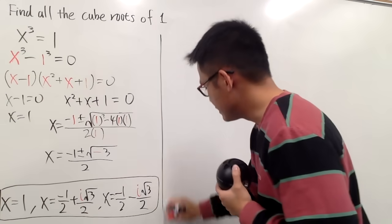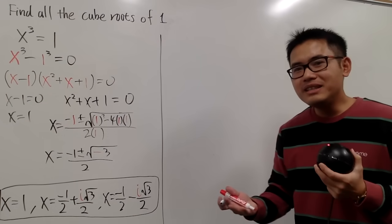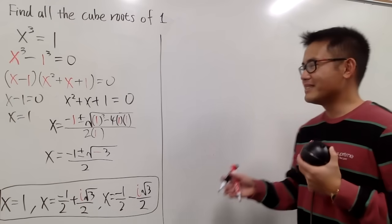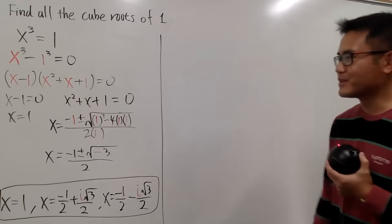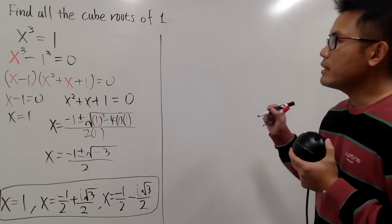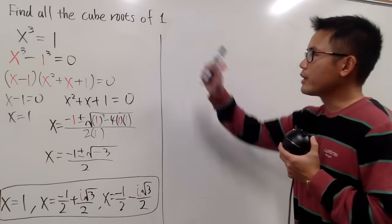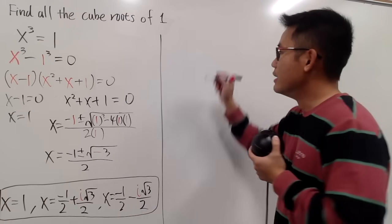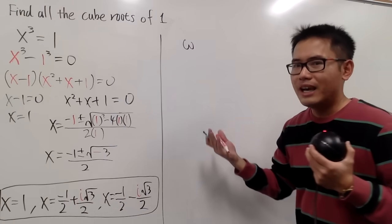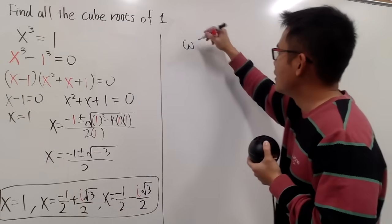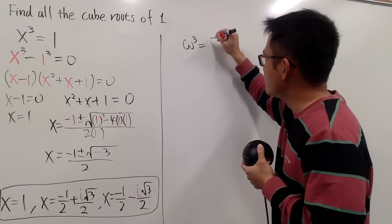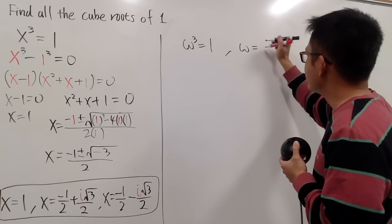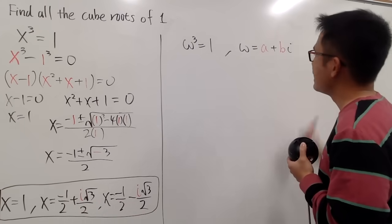Now here is the more interesting part. It's easier if you have seen sine, cosine, and the polar form of a complex number, but you can pick it up here too. To find the cube root of 1, I will use omega — you can use z as well. Omega to the third power equals 1, and omega is a complex number written as a plus bi. When we raise a complex number to a power, it essentially rotates.